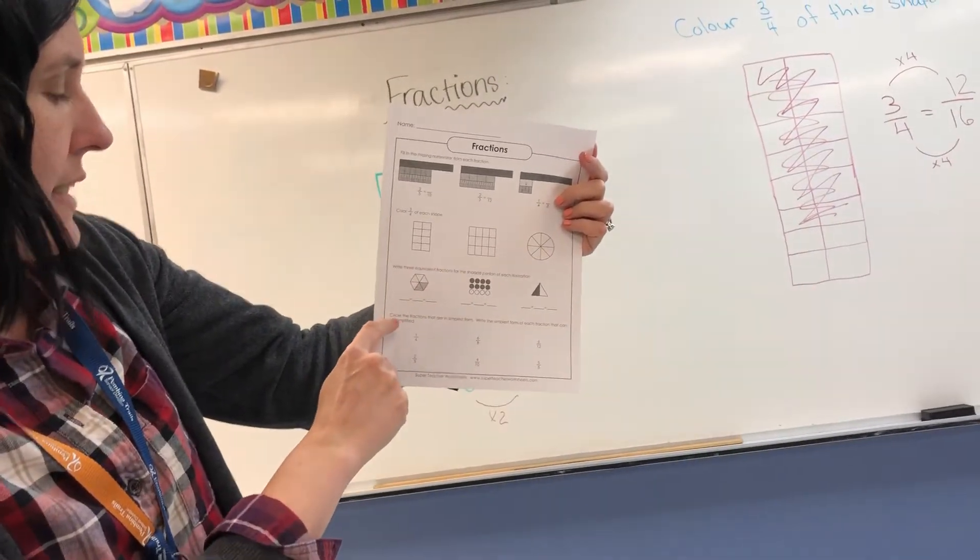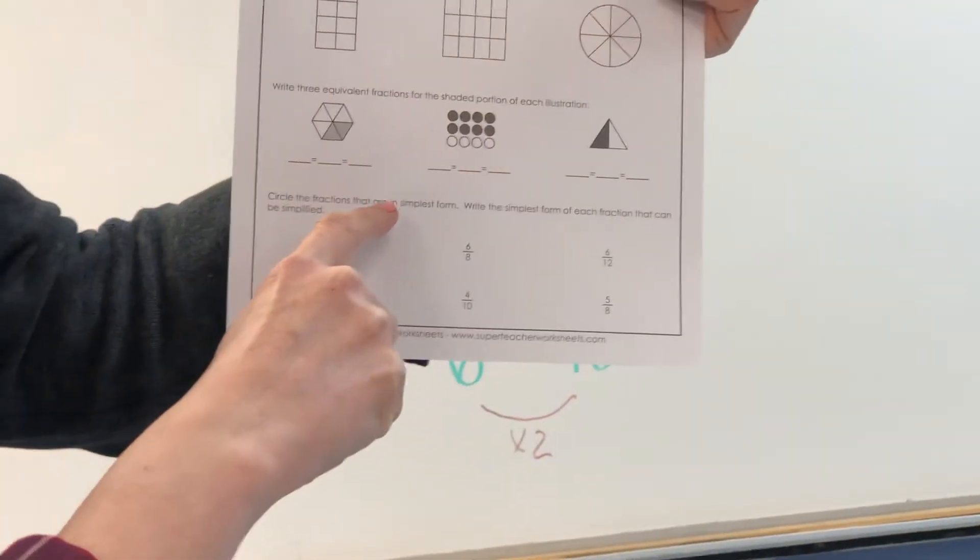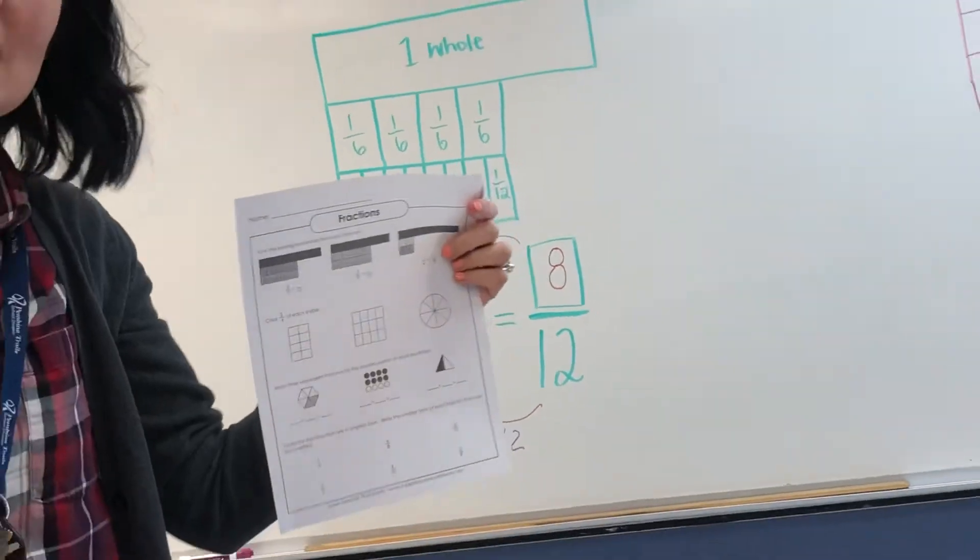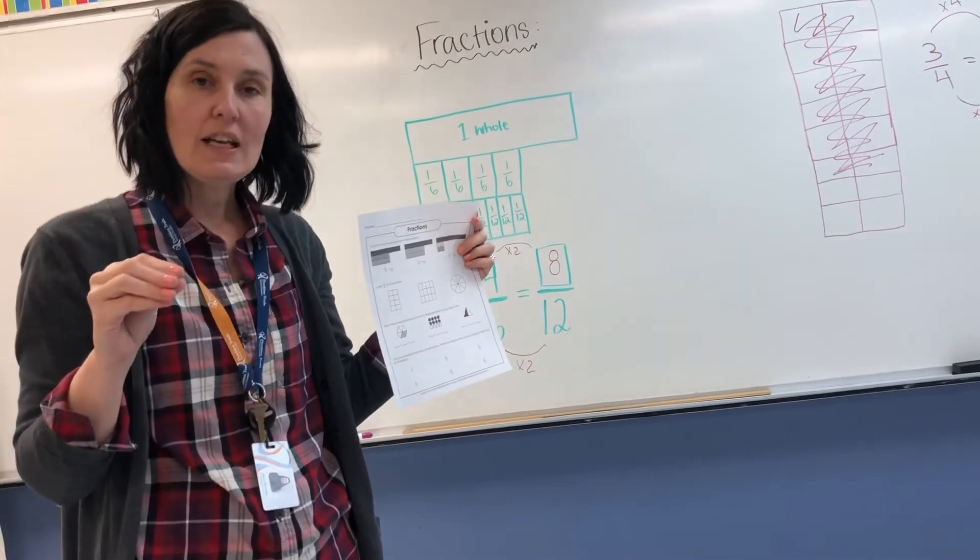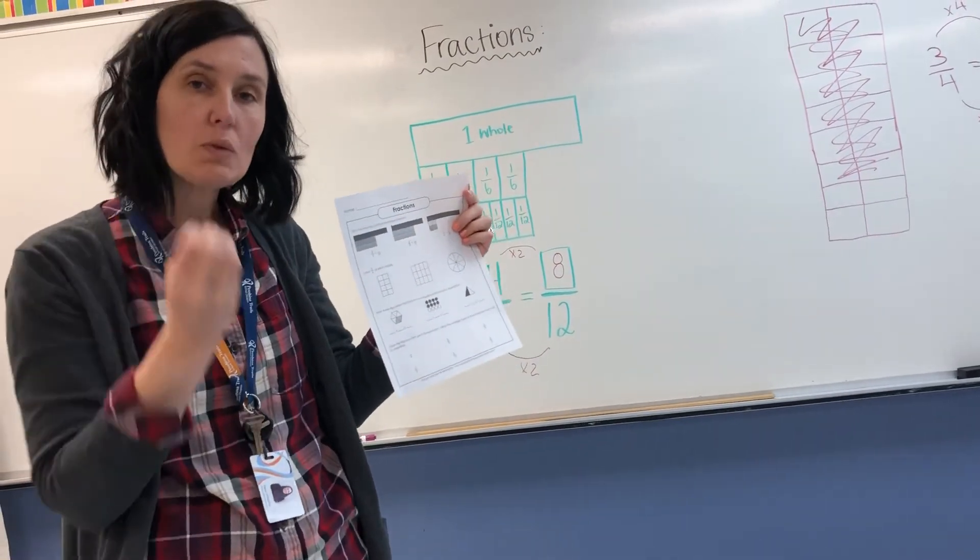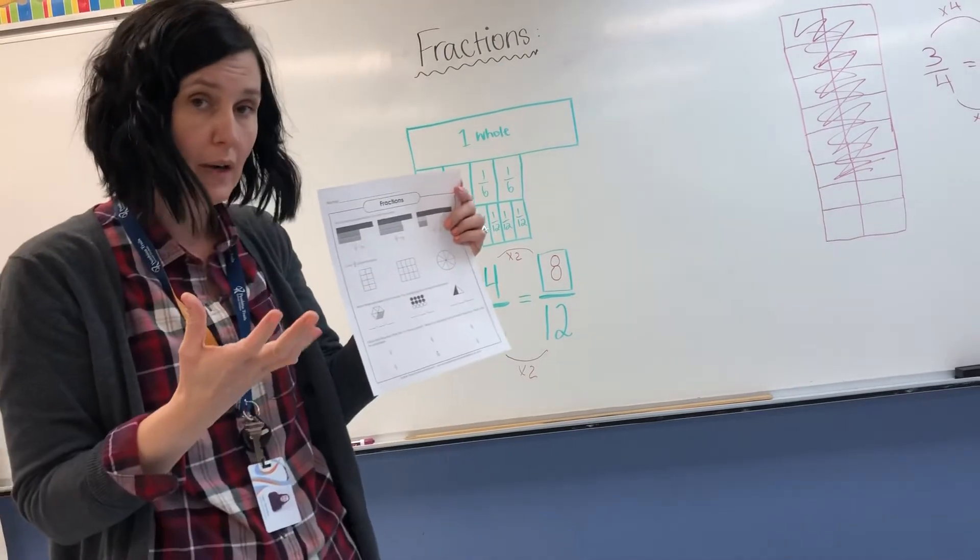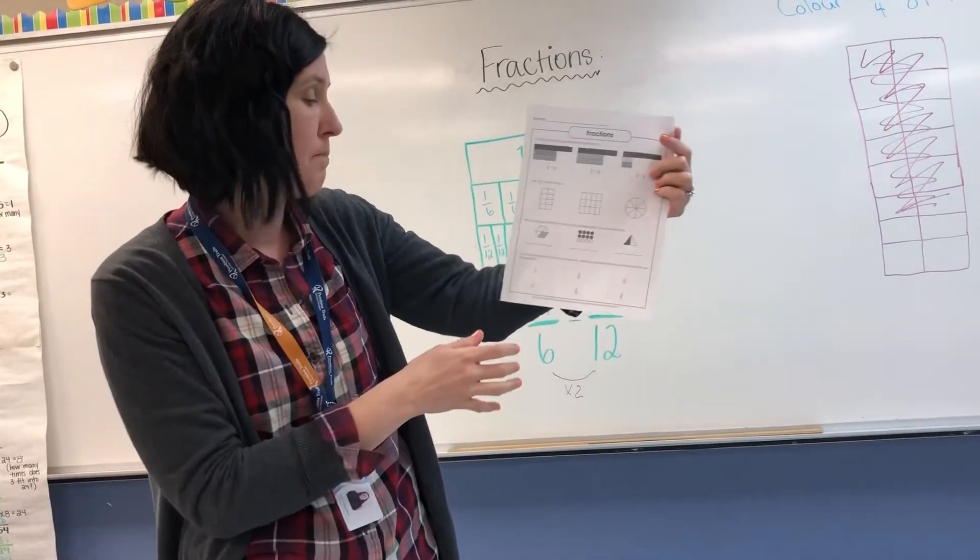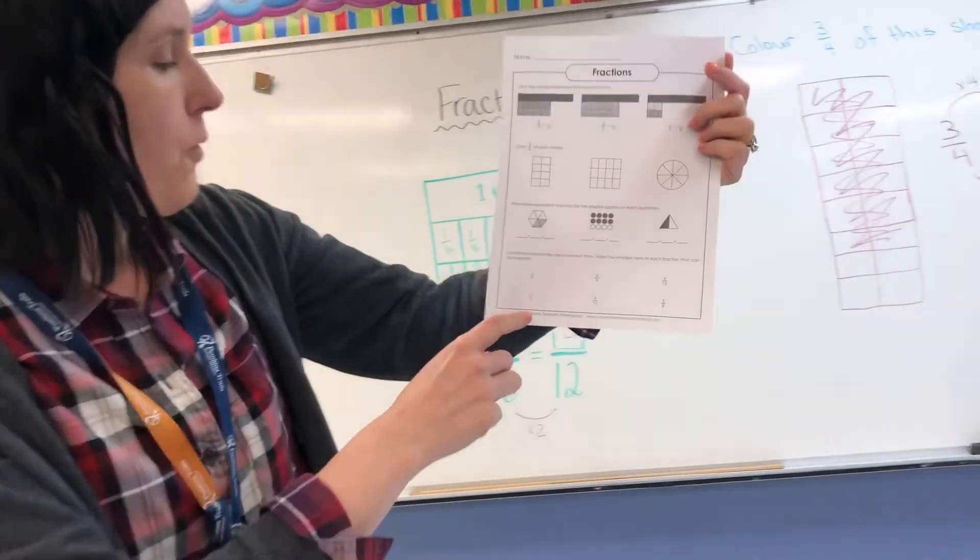And then here the last part is circle the fractions that are in simplest form. Simplest form means that the fraction cannot be broken down into a smaller number. So you can't divide it evenly into a smaller number.